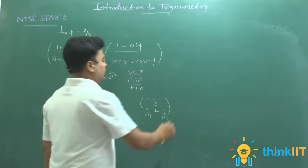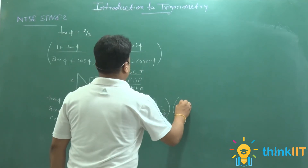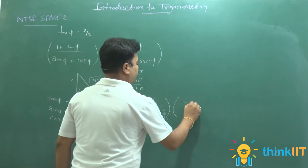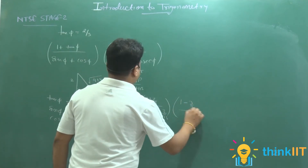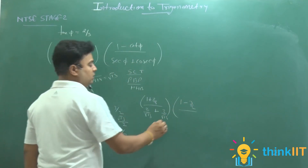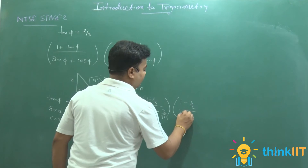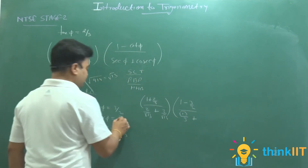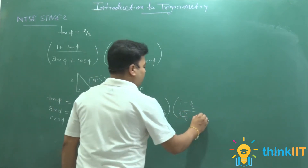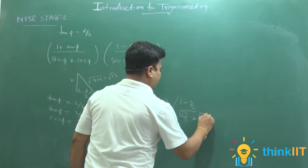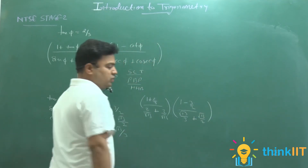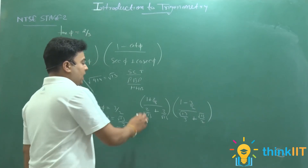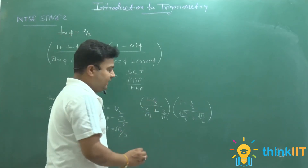दूसरा bracket: (1 − cot θ) / (sec θ + cosec θ) = (1 − 3/2) / (√13/3 + √13/2)। cot θ = 3/2, sec θ = √13/3, cosec θ = √13/2। इसको solve करना है।